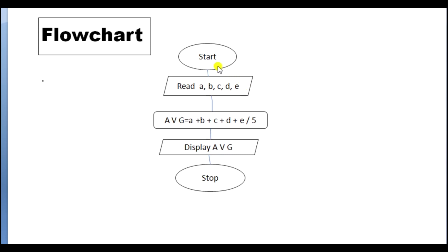Now in its flowchart, start the program. Read A, B, C, D, and E. For average, we have to apply the formula of average. In the next step, we have to display average. And finally, we have to stop the program.